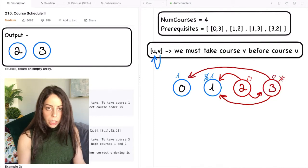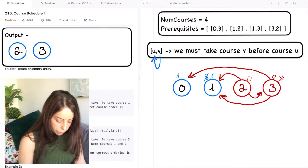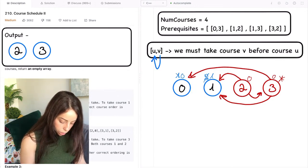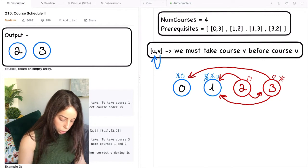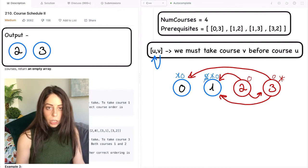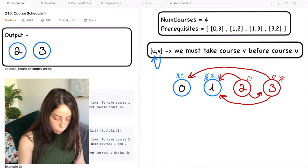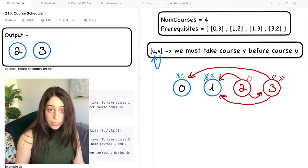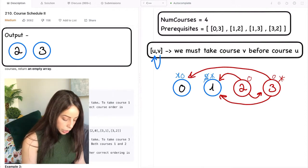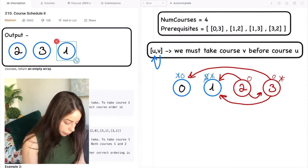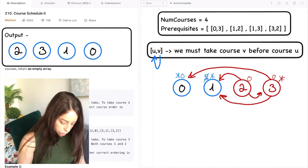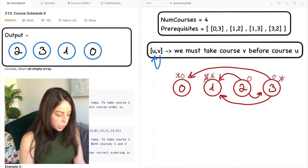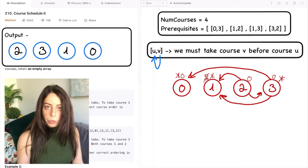Now again, we look at the neighbors of the node we just removed. This time it is both 0 and 1. Both of them now have 0 in degrees dropping from 1 to 0. So both of them are ready to be added to our schedule. Now we can add 0 and then 1 or the other way around. The inner order doesn't matter. So let's add 1 first, then 0 and remove them from the graph. Now the graph is empty, so we're done. And this is our output. This is the schedule that we're going to return.